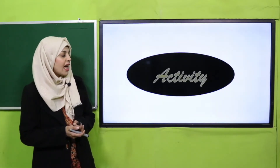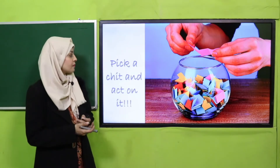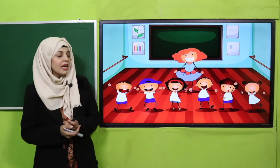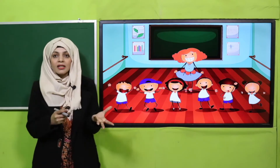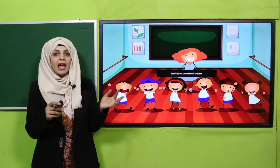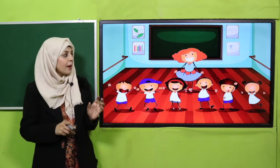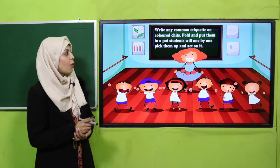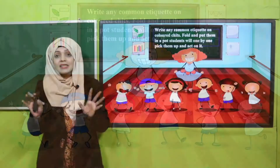Let's quickly move forward towards an activity. What you need to do is pick a chit and act on it. Write any common etiquettes on colored chits, fold them and put them in a pot. Every child will come and pick up a chit and act on the etiquette written on it.